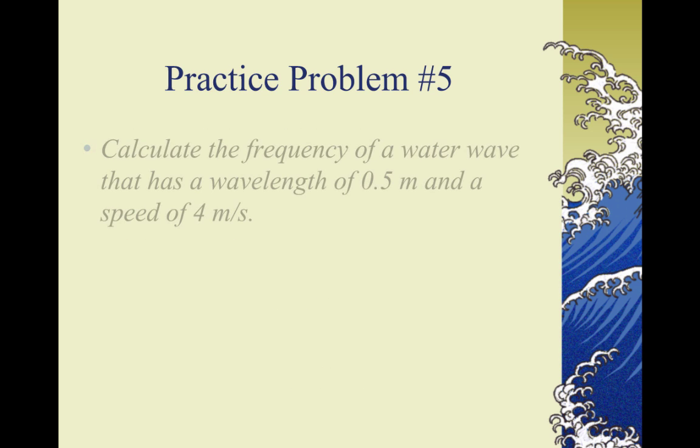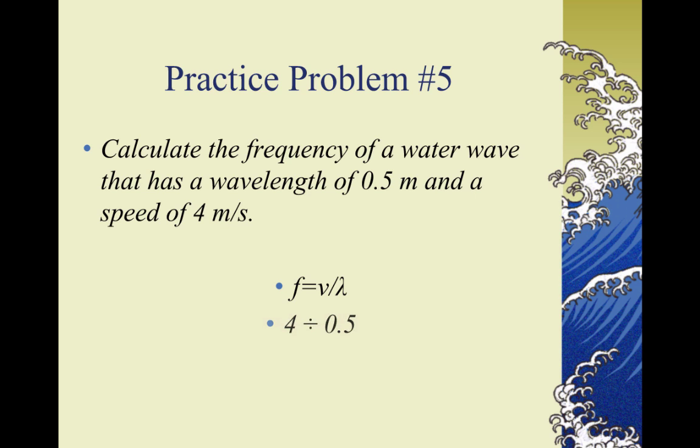Problem five. Calculate the frequency of a water wave that has a wavelength of 0.5 meters and a speed of 4 meters per second. Frequency is velocity divided by wavelength. 4 divided by 0.5 is 8 hertz.